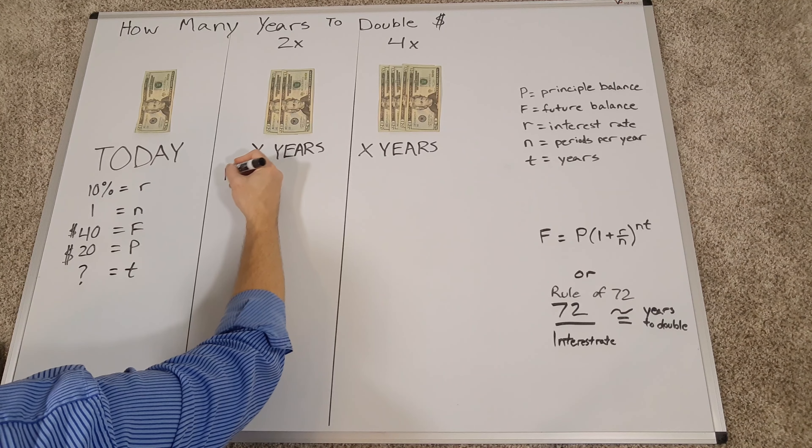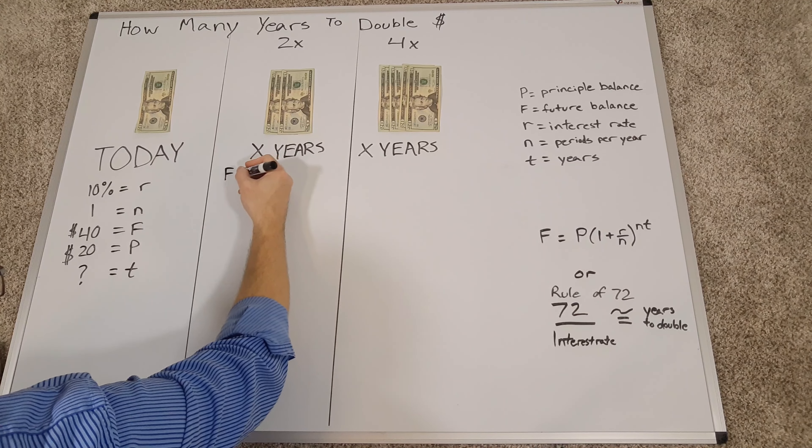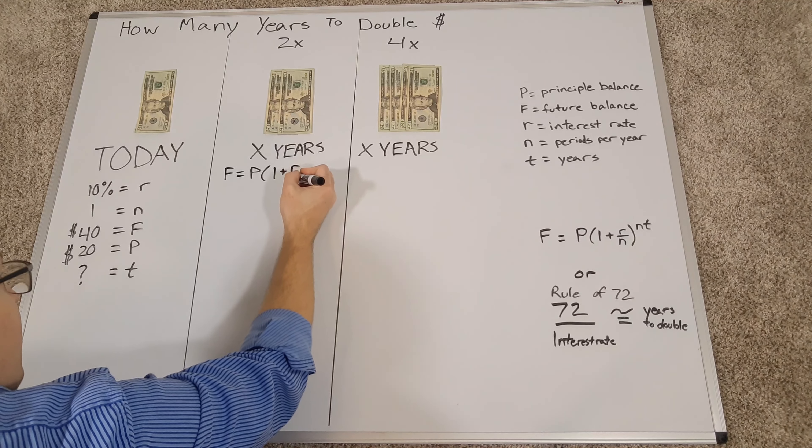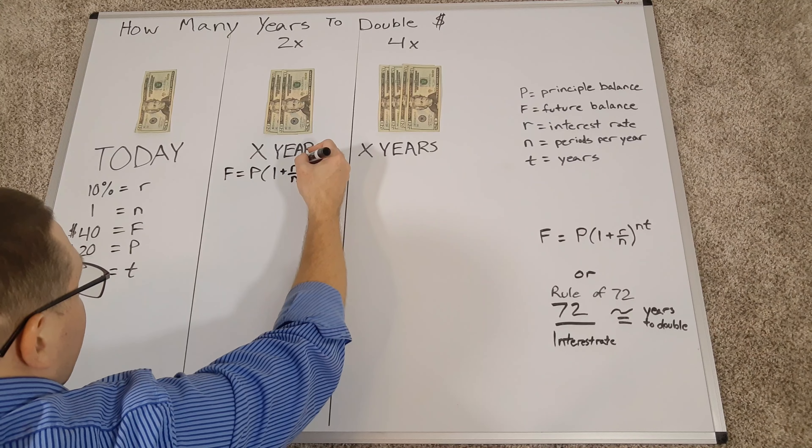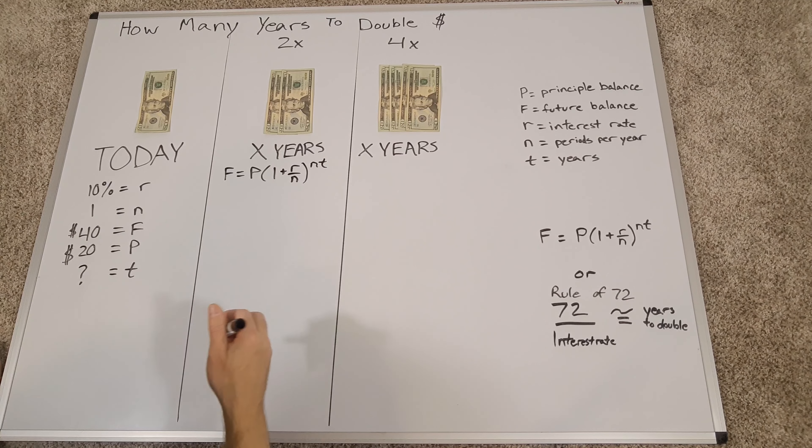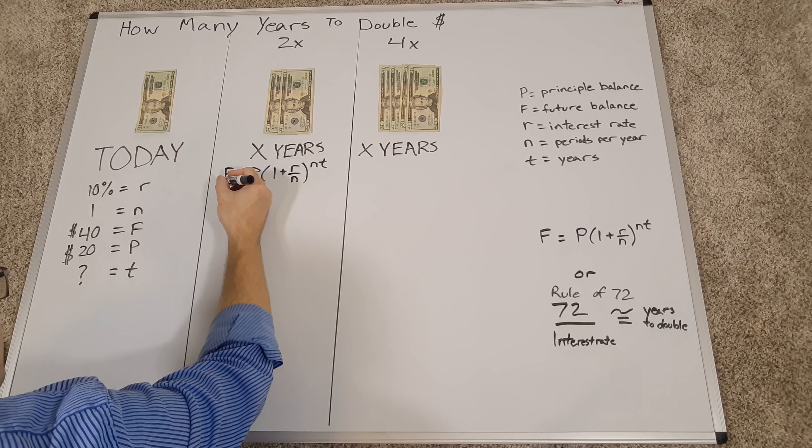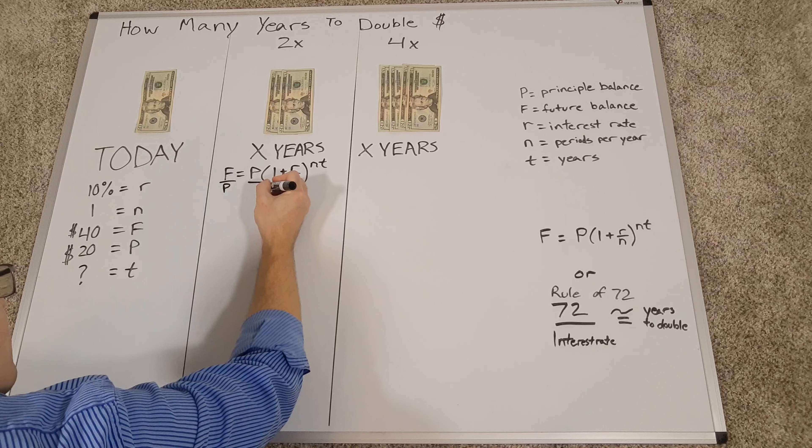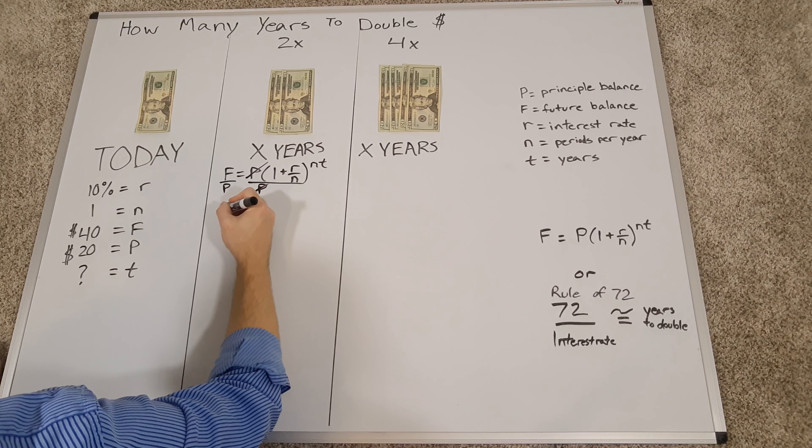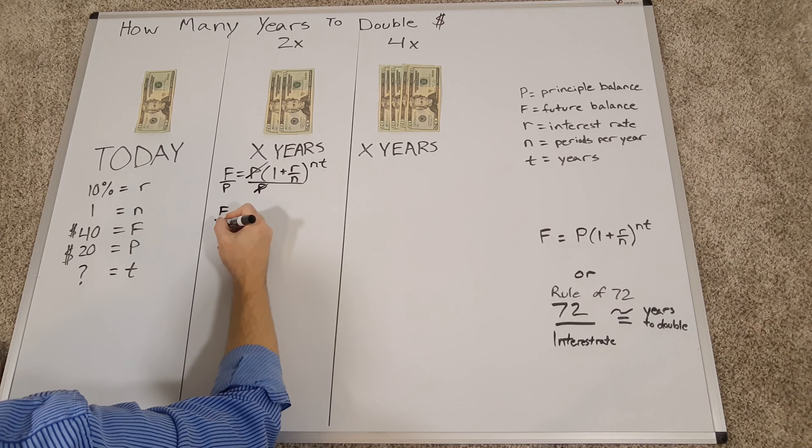So we have our f, our future value, is equal to our present value. You have 1 plus your r divided by number of periods to your nt. So we'll move the p over, divide both sides by p. Then we have f over p is equal to 1 plus your r divided by your n raised to the nt.